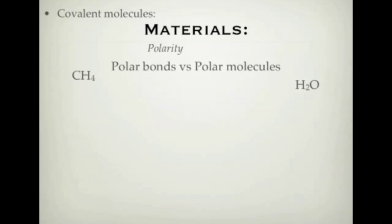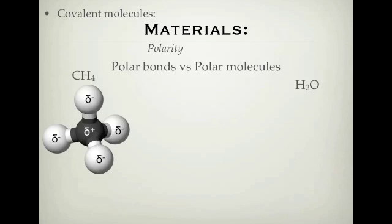So our two examples here are of methane, which is CH4, and water, H2O. Now the polar bonds and polar molecules can be explained using these two examples. So let's have a quick look at what they actually look like. Here is methane and it's got the polarity of each little part in there as well.